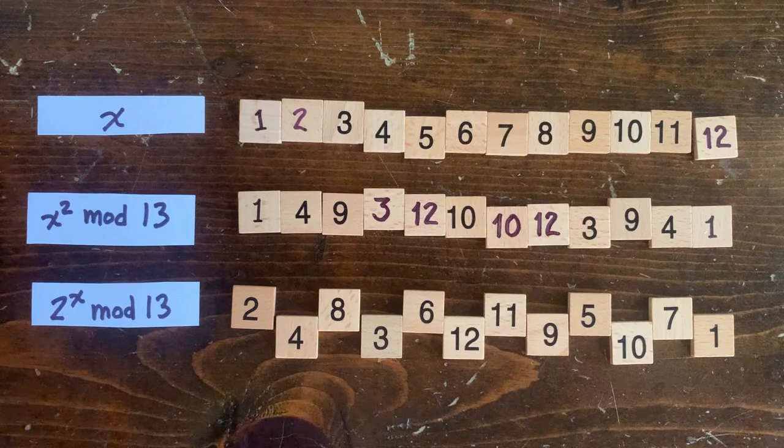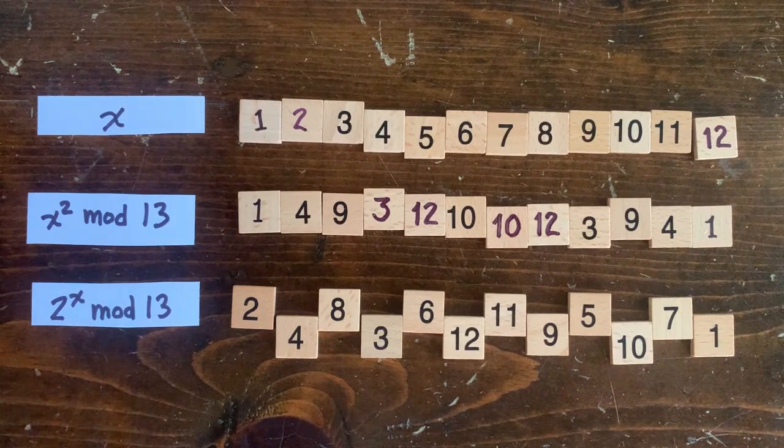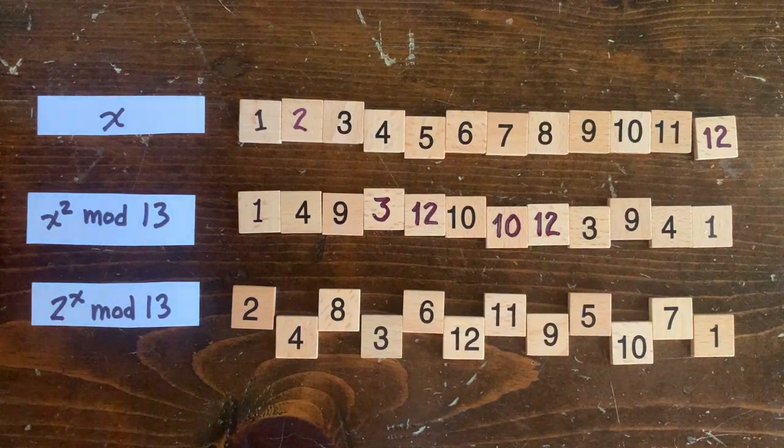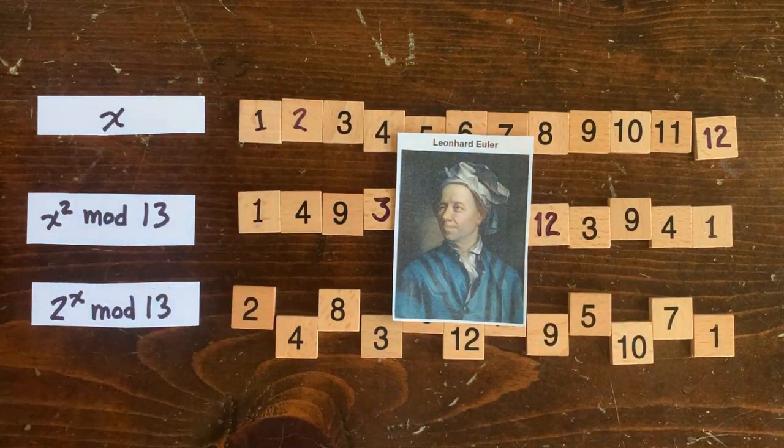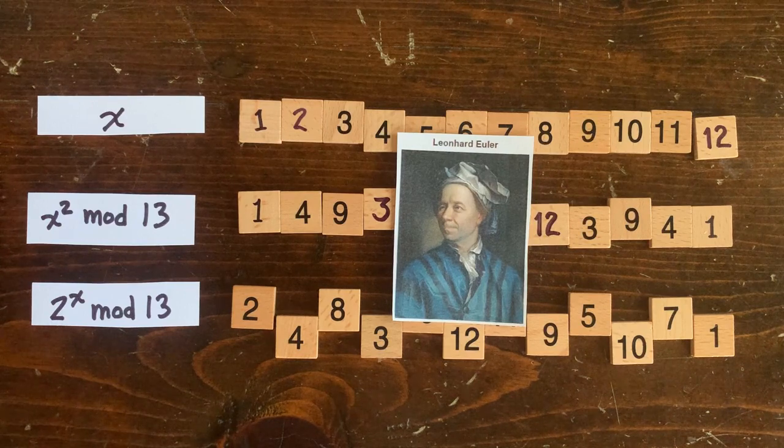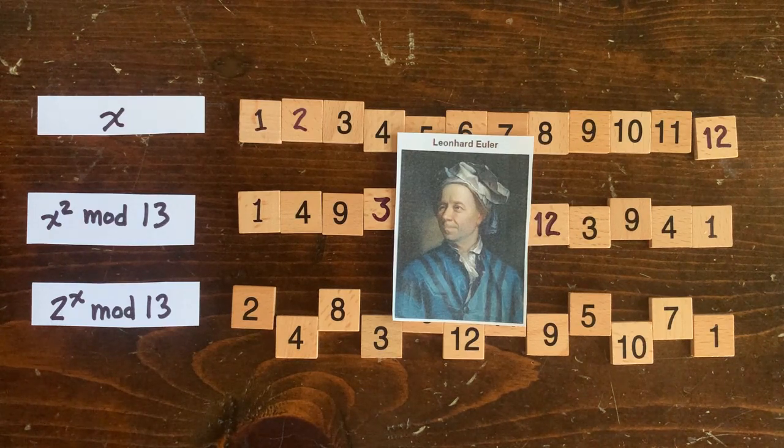I thought about that for a while, but finally couldn't come up with anything. So I went to Wikipedia to spy for a clue, and the first thing I read was that Euler spent two years proving this theorem of Fermat. What? Two years for Euler is like 20 years for a dog, so forget it.